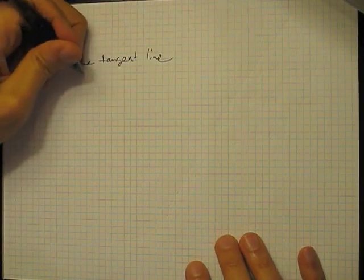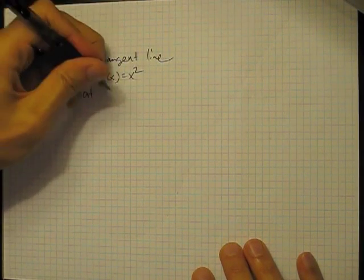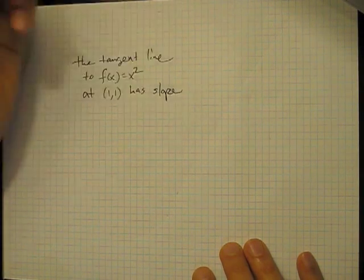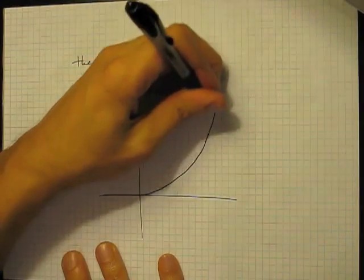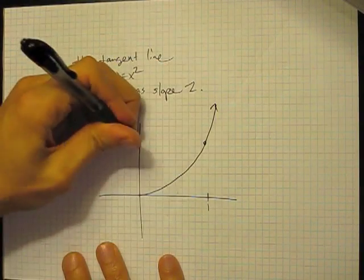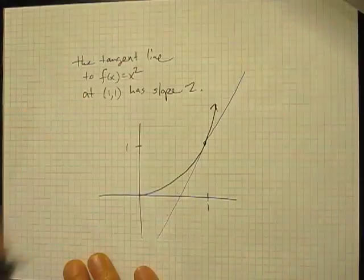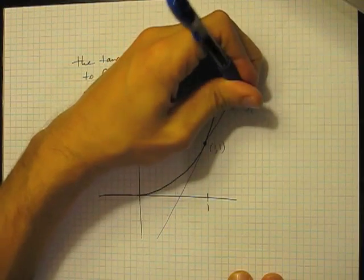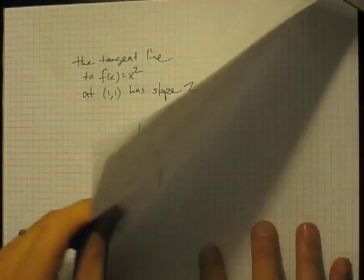The tangent line to the function x squared at 1,1 has slope 2. And in fact, if you actually were to sit down and compute what the equation of this line would be, then you would get, so this is the point 1,1. You would compute that this has slope 2. So that's the tangent line. We'll do problems like this in class.